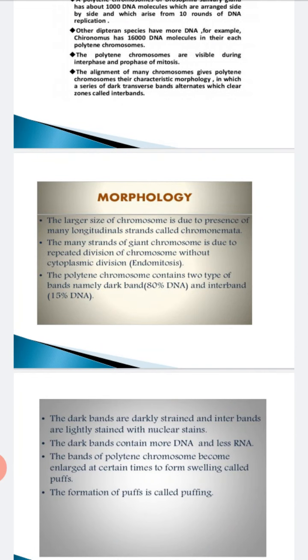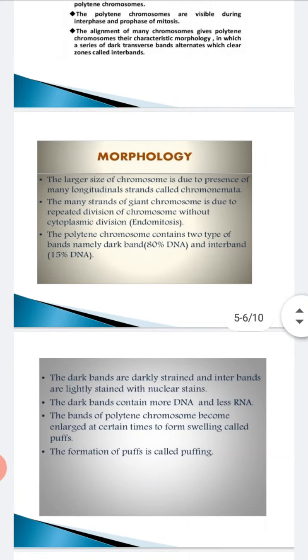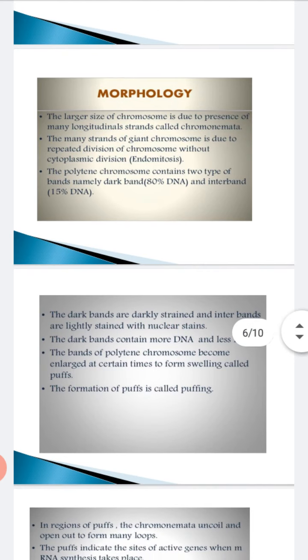Now coming to the regions of the puff, the chromonemata uncoil. Where puffs form, the DNA chromonemata uncoil and form many loops. The puffs indicate the site of active genes where mRNA synthesis takes place. The stained chromosomal segments correspond to high degree of packing and are generally inactive. Inactive sites are heterochromatin and active sites are euchromatin.